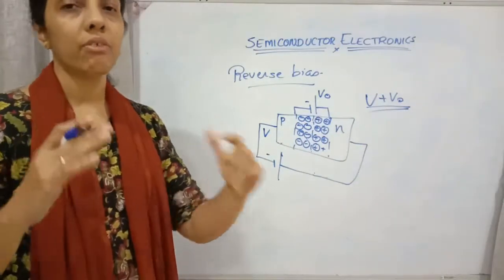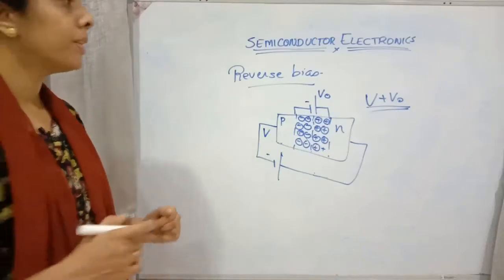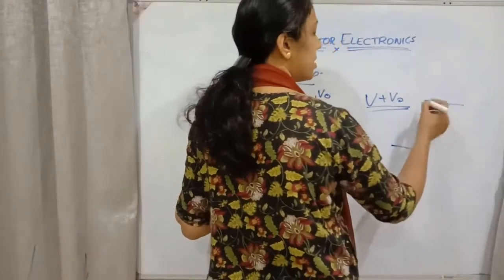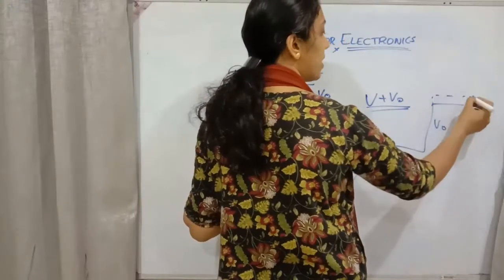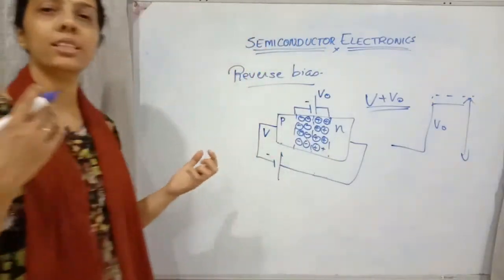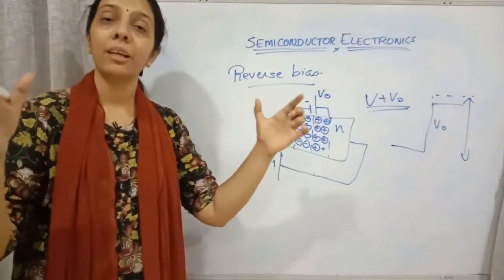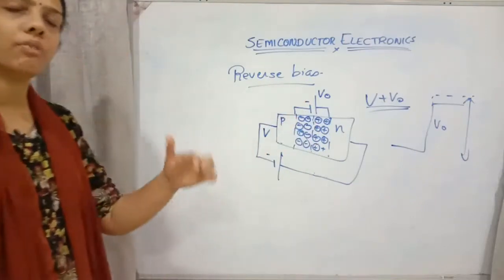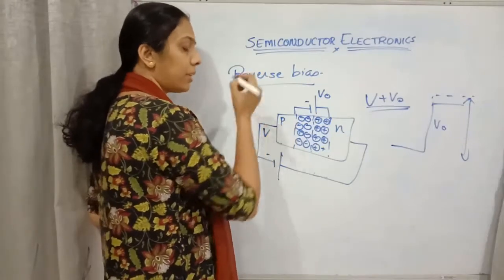That means the barrier potential will be increasing when we connect it in reverse bias. This was the potential barrier V₀ before, and after applying reverse bias it gets increased. So the barrier potential is increasing and the depletion region is also getting increased under reverse bias.